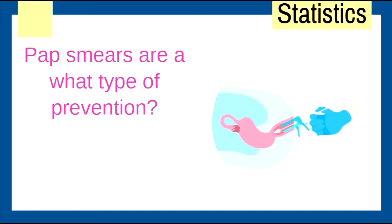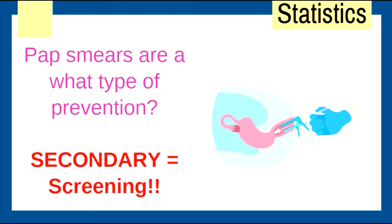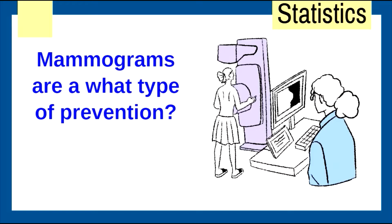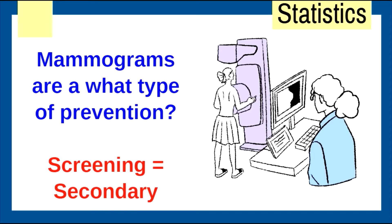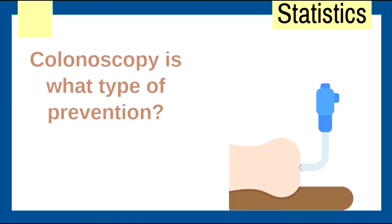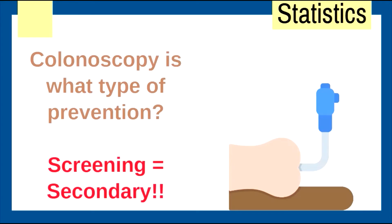Pap smears are what type of prevention? Remember, secondary equals screening — any screening test will be secondary. Mammograms? Screening, secondary. Colonoscopy? Screening, secondary. Remember the S's: S for screening, S for secondary.